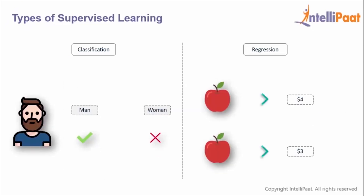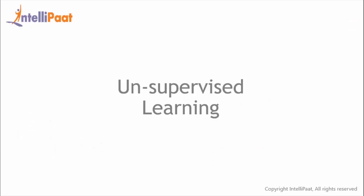Supervised learning problems can be further grouped into regression and classification. A classification problem is when the output variable is a category — for example, the output variable is gender, that is, we're trying to determine if the input data is female or male. A regression problem is when the output variable is a real value — for example, the output variable is the price of 1 kg of apples. So that was supervised learning.